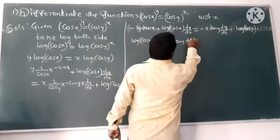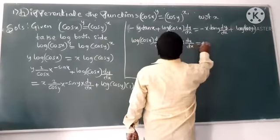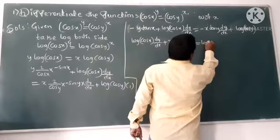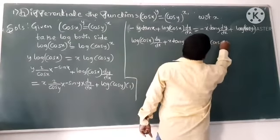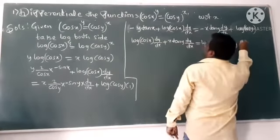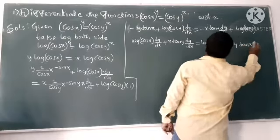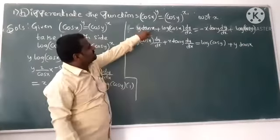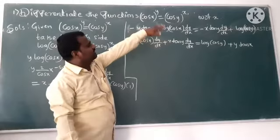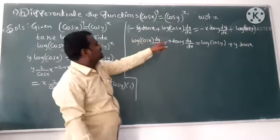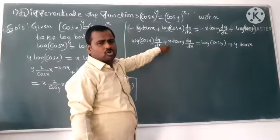So log(cos x) dy/dx plus x tan y dy/dx = log(cos y) plus y tan x. This term and that term on one side, opposite signs.